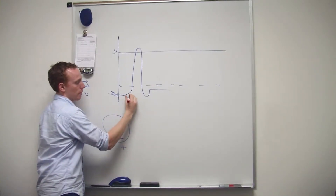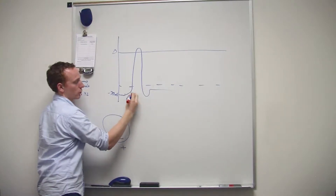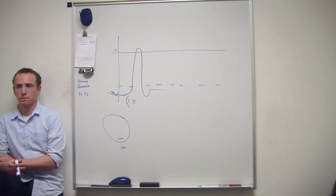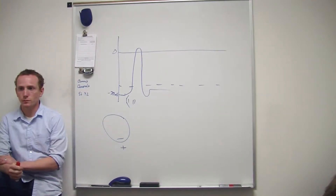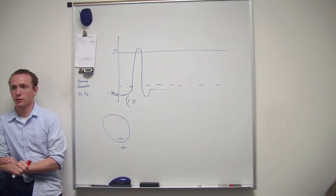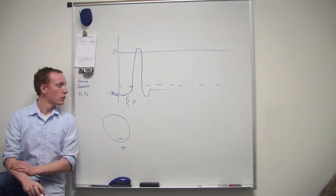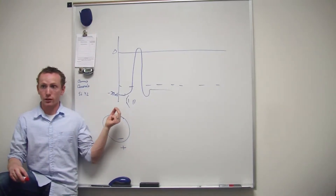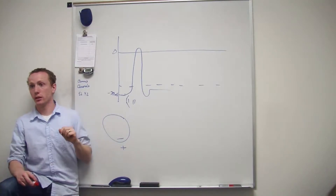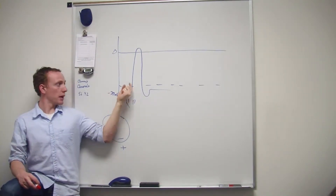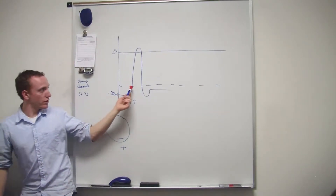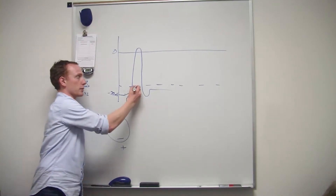Sodium gates open, potassium starting to open. What does threshold mean? Threshold is the point at which an action potential is either going to happen or not. If it hits threshold, an action potential will happen; if it doesn't, it won't. More and more sodium gates are opening, and threshold is like a string of dominoes — once you hit that point, all the sodium channels are going to fly open.